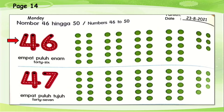Now let's start counting. Let's see the first number here. 4 and 6 together is called 46. Ampat pulo annam. 46.